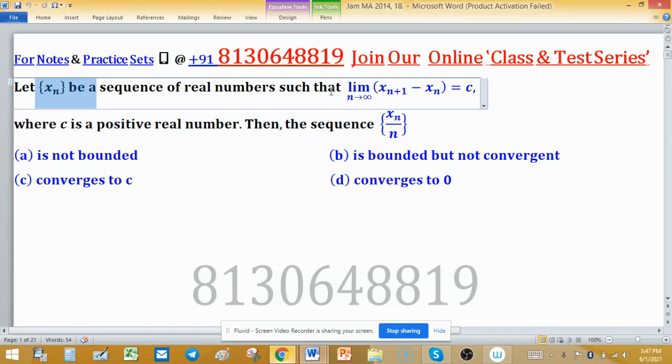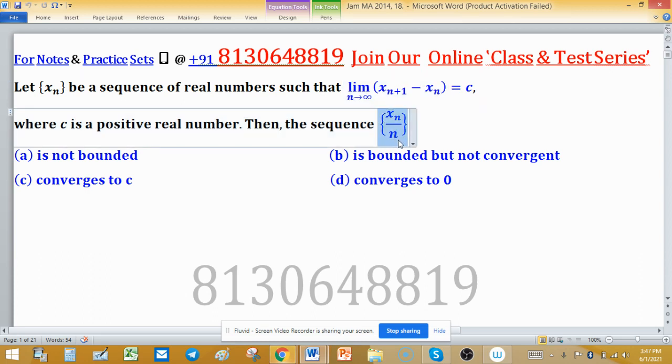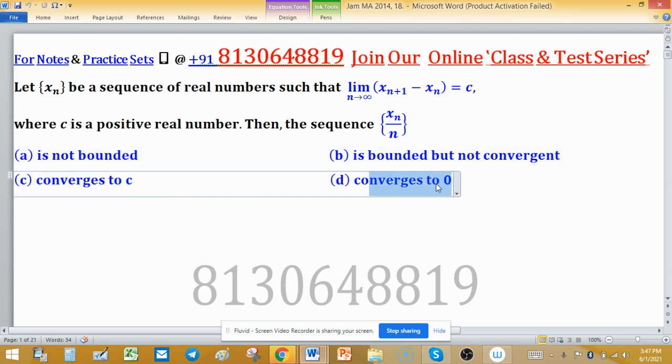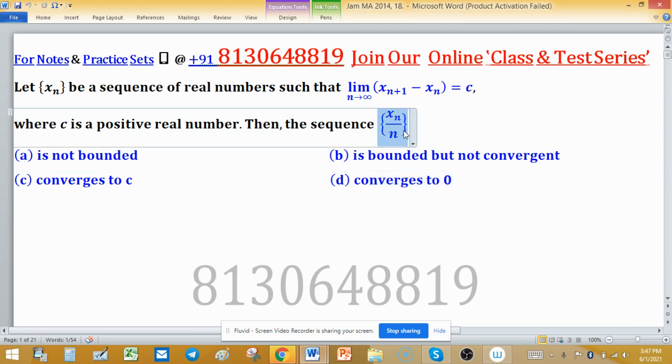Let XN be a sequence of real numbers such that the limit of XN plus 1 minus XN is equal to C, where C is any positive real number. Then the sequence XN upon N: is not bounded, is bounded but not convergent, converges to C, or converges to 0. We have to determine which statement about XN upon N is correct.